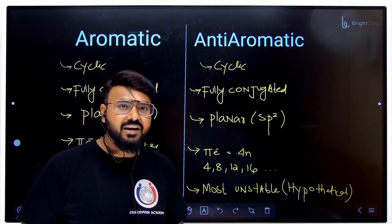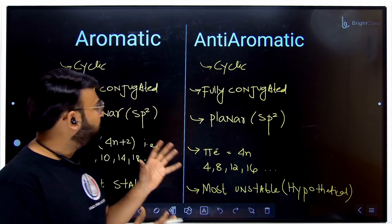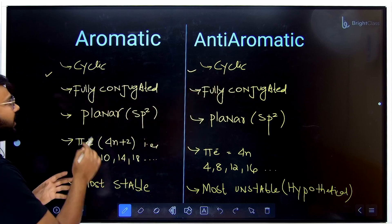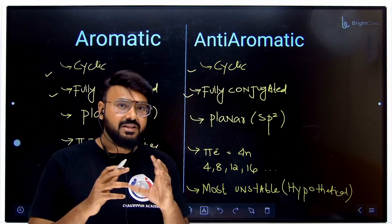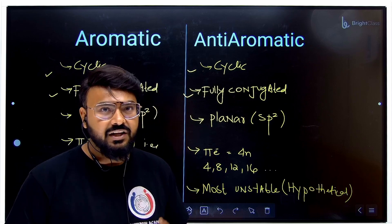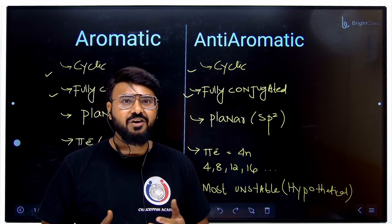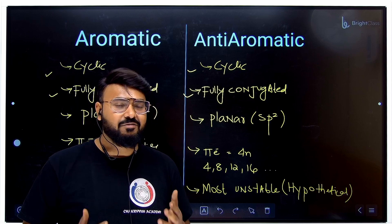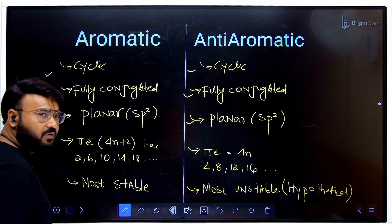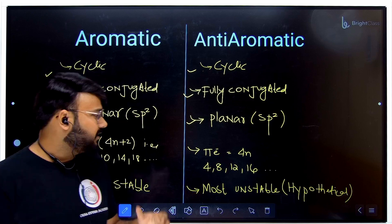As per Hückel's rule, aromatic and anti-aromatic compounds share some common criteria. First, they both must be cyclic. Second, they must have complete conjugation — meaning there should be complete resonance throughout the ring. Third, each carbon should be in sp2 hybridization, making the molecule planar. You don't have to verify this condition; you can assume it by default.